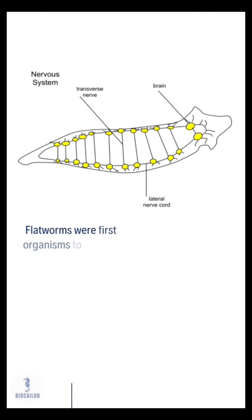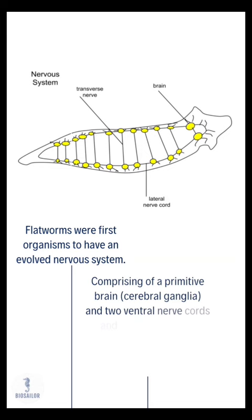Flatworms were the first organisms to have an evolved nervous system, comprising a primitive brain and two ventral nerve cords and transverse cords arranged in a ladder-like fashion.